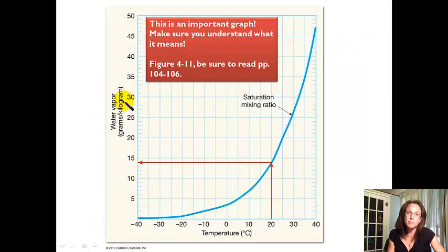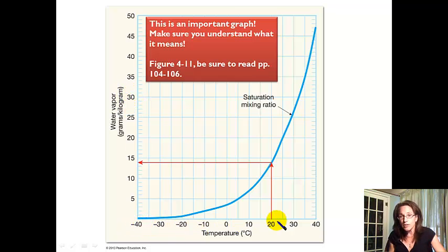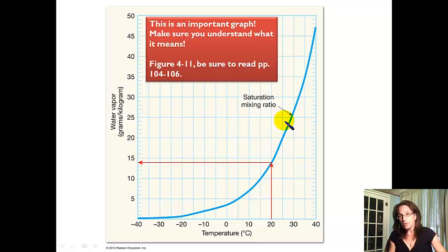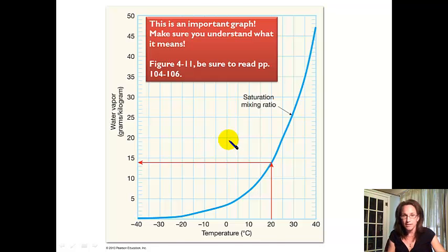We can plot this — expressing the amount of water vapor as mixing ratio (grams of water vapor per kilogram of dry air) on the y-axis and temperature from minus 40 to plus 40 degrees Celsius on the x-axis. The saturation mixing ratio increases with increasing temperature. At 20 degrees, air is saturated at 14 grams per kilogram; at 30 degrees, saturation occurs at 26 grams per kilogram. This is a really important concept for cloud formation and weather processes.